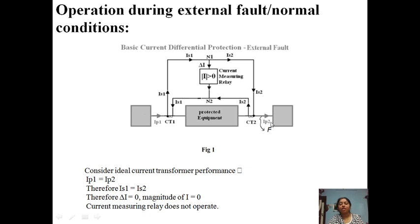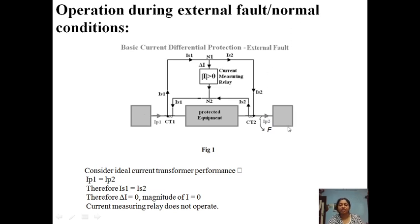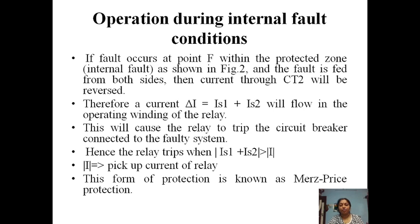For an external fault, consider a fault at point F outside CT2. This fault is outside the protected zone. The current through CT2 is not reversed; it is unchanged. Therefore the relay will not operate. So for both normal condition and external fault, the relay will not operate — that is why this is called unit type protection.